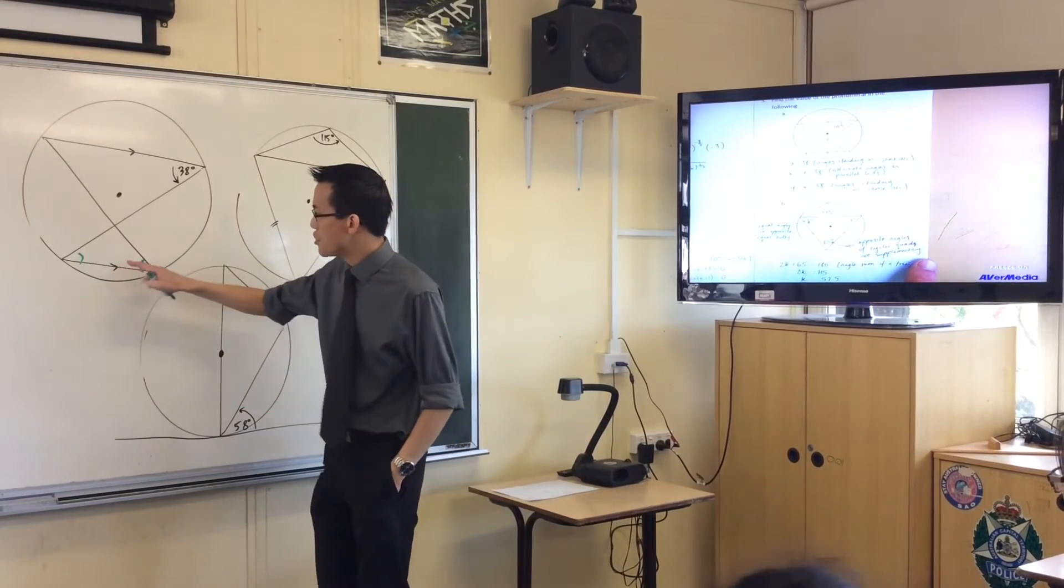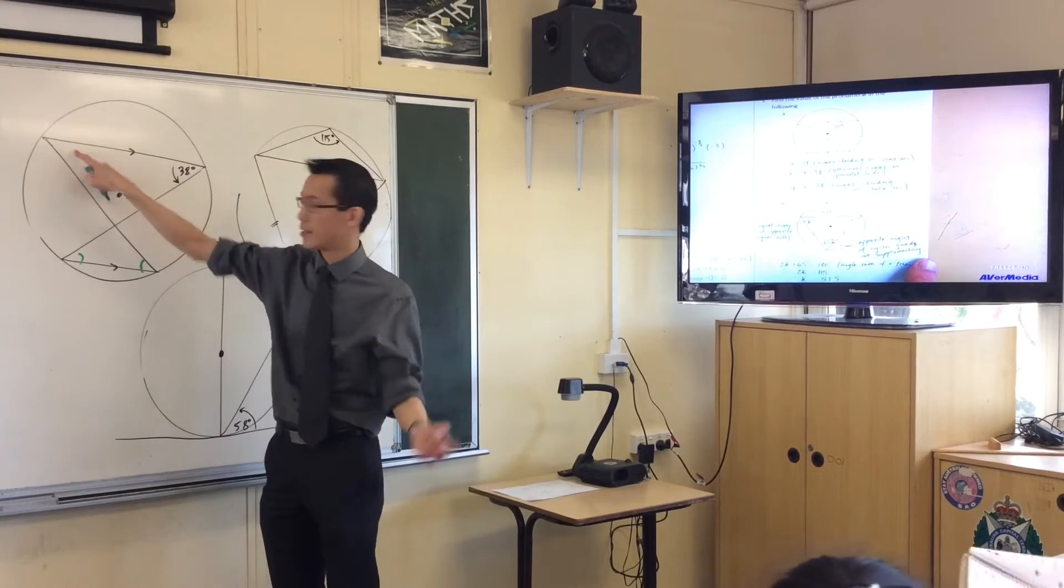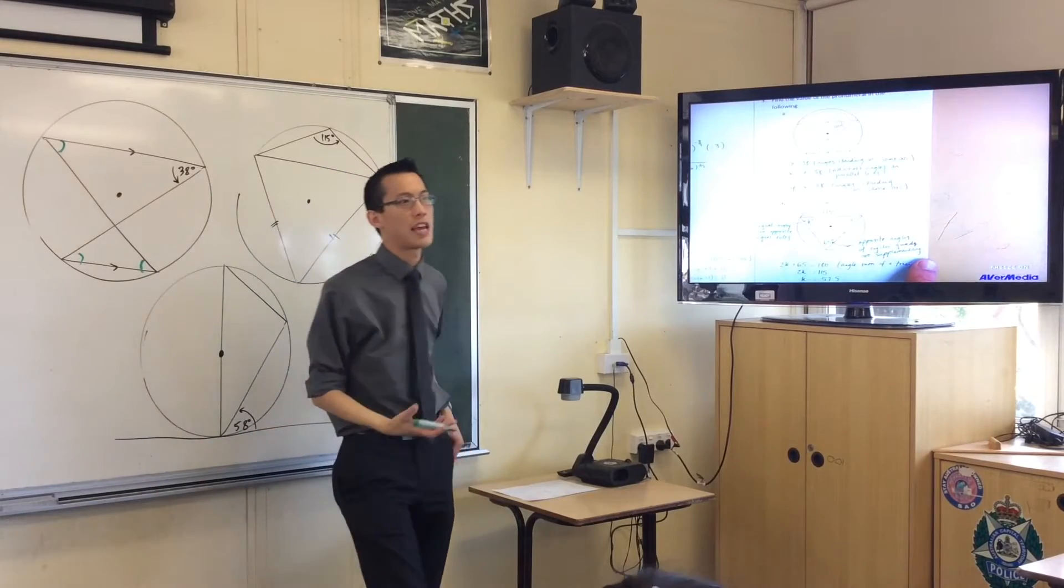And then lastly, you can either go from either of these up to here, again for the same reasons. If I went from here to here, it would be alternate angles. If I went from here to here, it would be angles standing on the same arc.